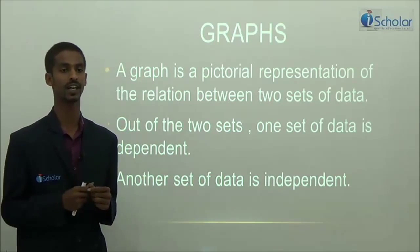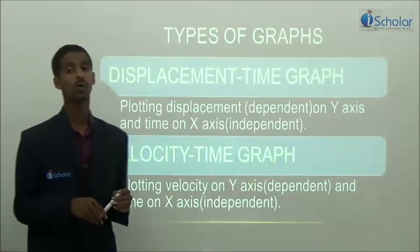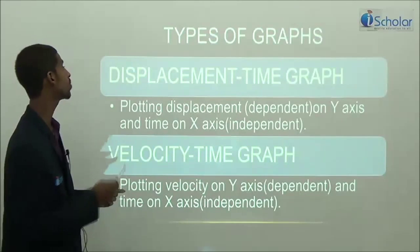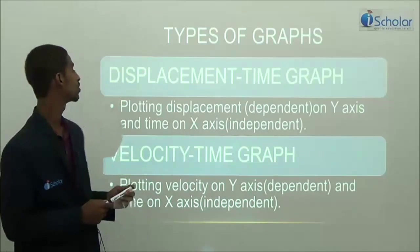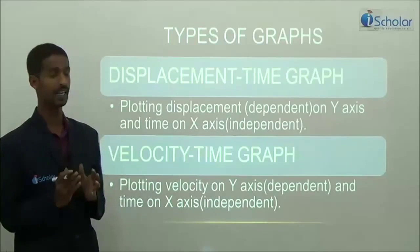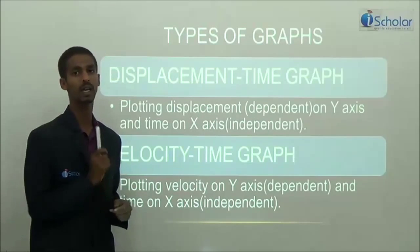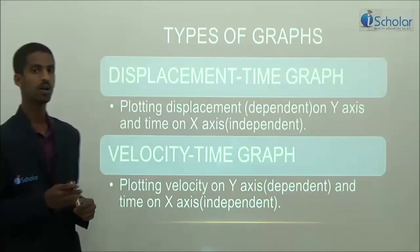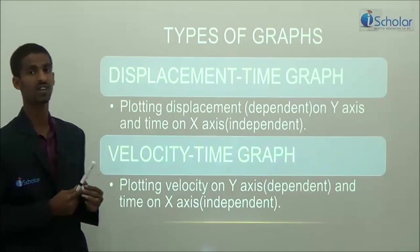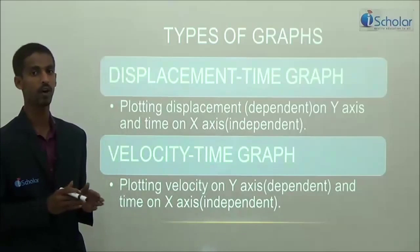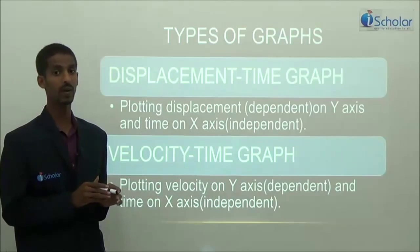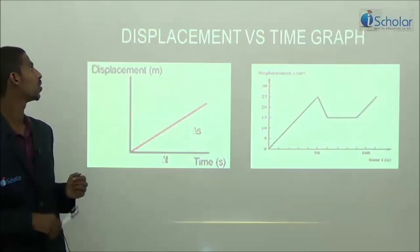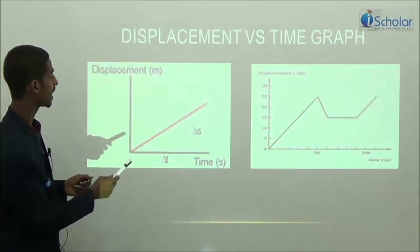We'll come across two types of graphs when dealing with motion. The first is the displacement-time graph, where displacement — a dependent variable — is plotted on the y-axis and time on the x-axis; time is independent. The second type is the velocity-time graph, where velocity is plotted on the y-axis as the dependent variable and time on the x-axis as the independent variable.